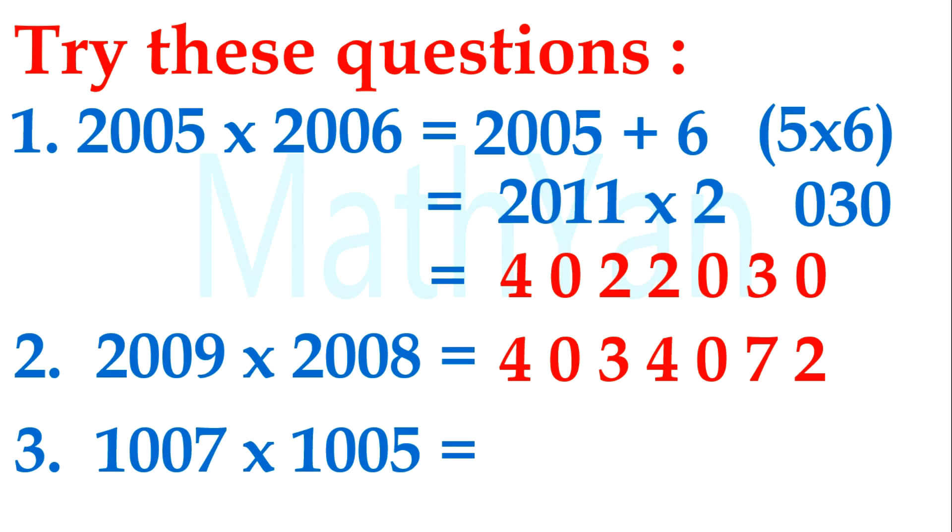How about this? 2007 times 2005. This one does not need to times 2 because of base 1000. So 2007 plus 5 is 2012. Then number behind, 7 times 5 is 35. This is of base 1000.